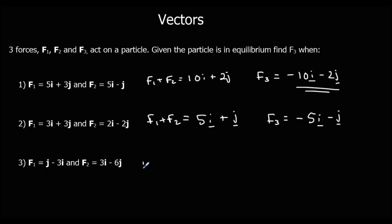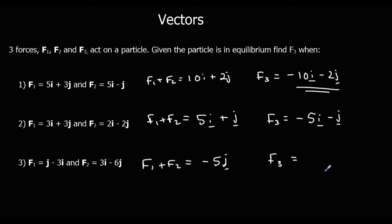And question 3: f1 and f2 add up to minus 5j — the i components sum to zero. So what do we need f3 to be for the overall force to equal zero? We need f3 to be 5j.